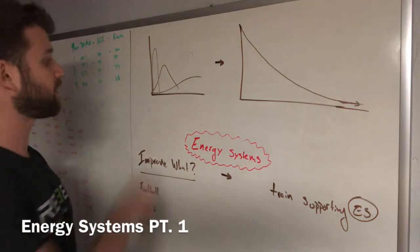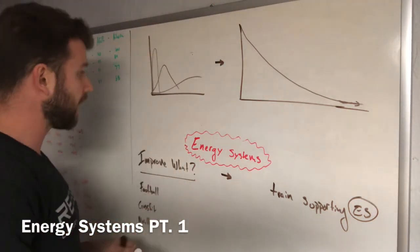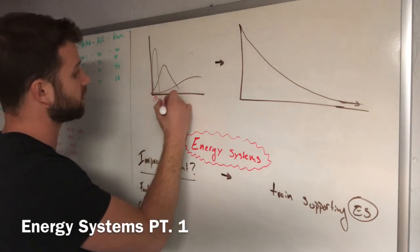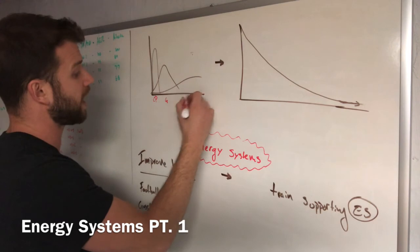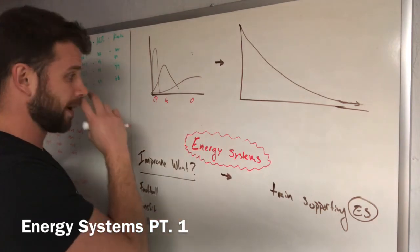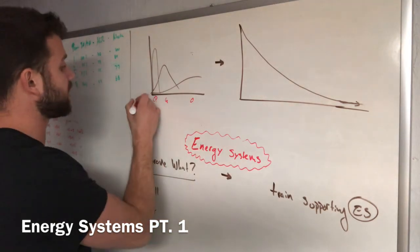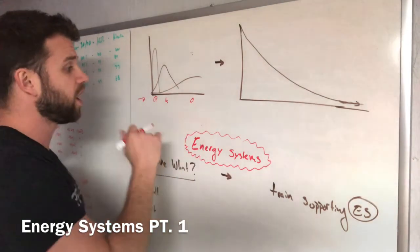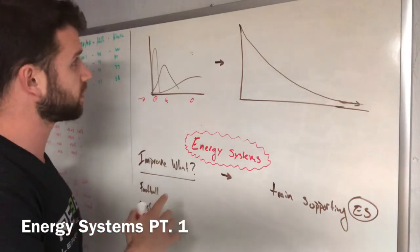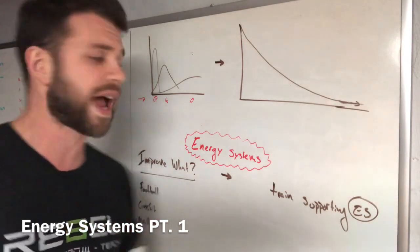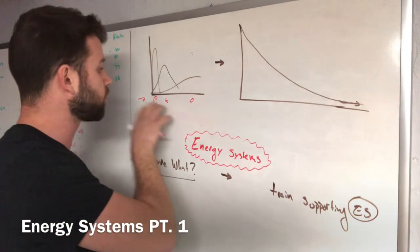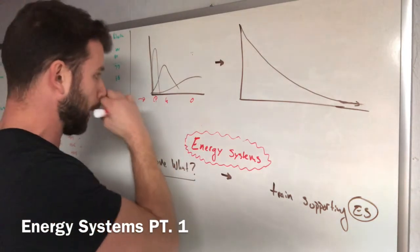But for most of us, we've seen this graph before and we've seen it designated as your creatine phosphate system, your glycolytic system, and then your oxidative system. Those are great. Understand that the CP, glycolytic and oxidative, those are abbreviations that are meant to keep it simple, but they're actually fuel substrates. So those are the fuel sources that we're using.